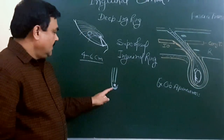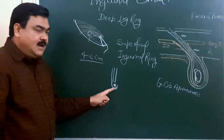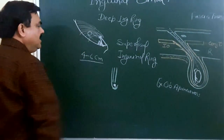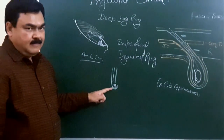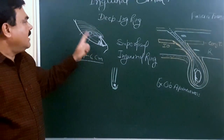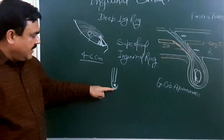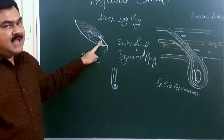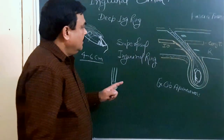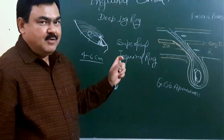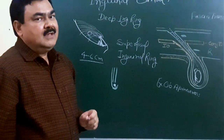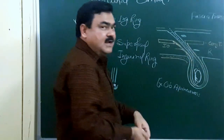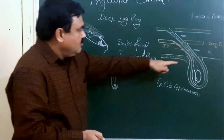The floor is formed by the concave superior surface of the inguinal ligament, and medially also by the superior surface of the lacunar ligament. These are the boundaries — anterior boundary, posterior boundary, roof, and floor — of the inguinal canal. The important content of this canal is, in the male, the spermatic cord, and in the female, the round ligament of the uterus.